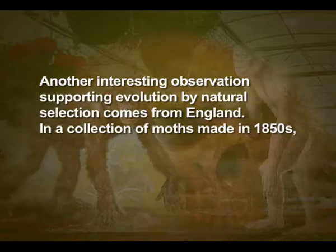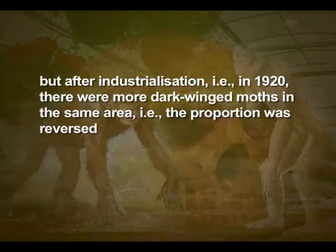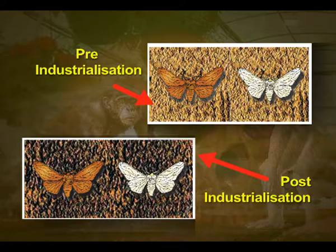Another interesting observation supporting evolution by natural selection comes from England. In a collection of moths made in the 1850s — that is, before industrialization set in — it was observed that there were more white-winged moths on trees than dark-winged or melanized moths. However, in the collection carried out from the same area after industrialization, that is in 1920, there were more dark-winged moths in the same area — the proportion was reversed.